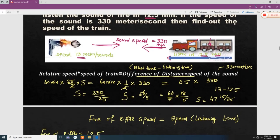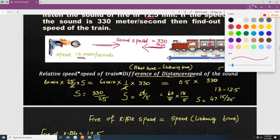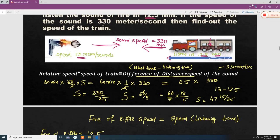So whenever this kind of questions are going to come, you have to apply the following equation. Relative speed multiplied by speed of a train is equal to, remember this is equal to difference of distance and speed of sound. Now first of all, we will understand what is difference of distance.